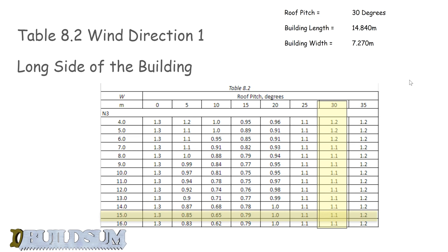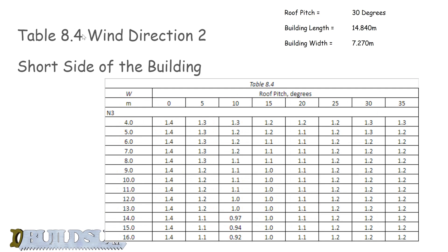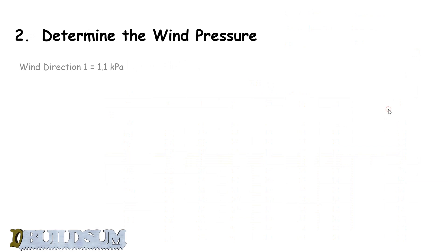Now for the short side, we're using table 8.4 — wind direction 2. It's a similar table but with different figures. Again using the 30-degree column, our building is only 7.2 meters wide, so we use 8 — we can't go under. We get a lateral wind pressure on the short side of 1.2 kPa.